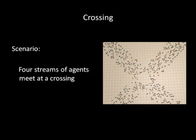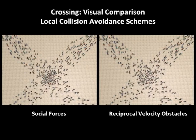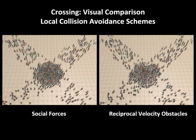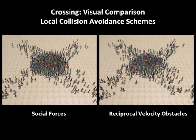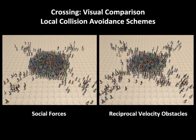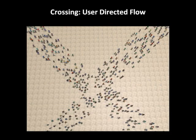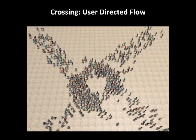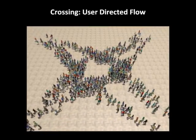This scenario shows four streams of agents meeting at a crossing. It is a well-known fact observed in real crowds that this particular configuration results in the formation of a vortex at the center. Traditional agent-based models are not necessarily able to replicate this particular emergent phenomenon. Our approach allows the user to emulate such emergent phenomena — such as vortex formation and formation of lanes — even in simple agent-based models to generate more plausible behavior.